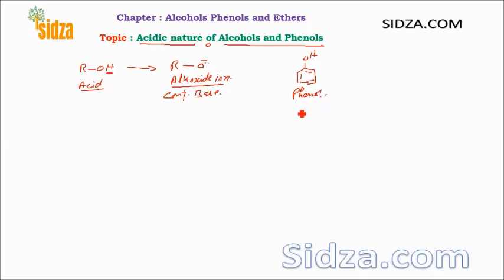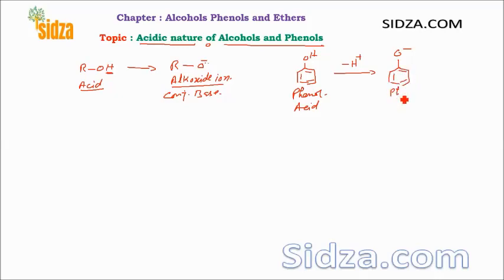Similarly, when phenol acts as an acid, it has an acidic proton. When it dissociates the H+ ion, we get the phenoxide ion. The phenoxide ion is the conjugate base of the acid phenol.